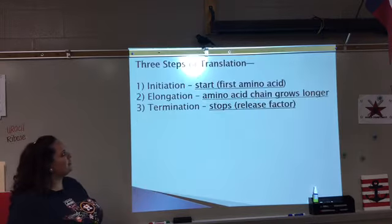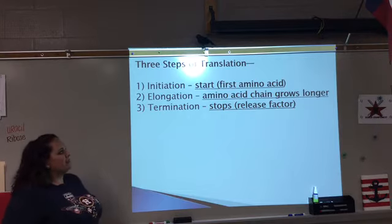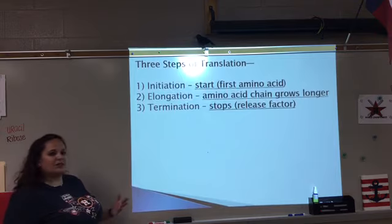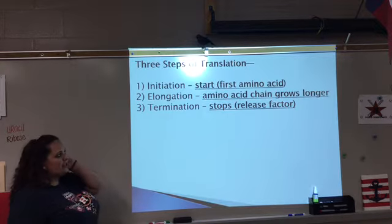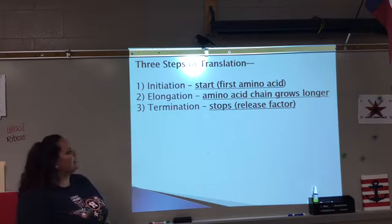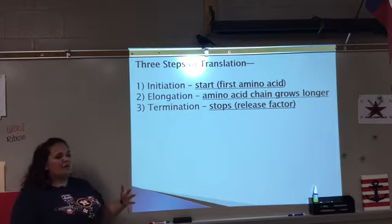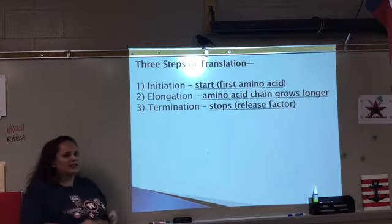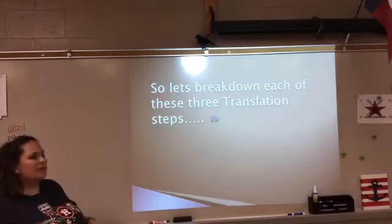There are three main steps to translation. The first one is initiation — that's where you start by putting in your first amino acid. Step two is elongation — that's where your amino acid chain is elongating and growing longer. Step three is termination — that's the stop, and it actually releases your protein chain.